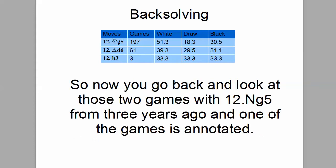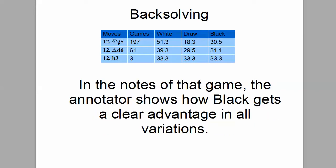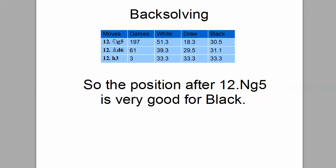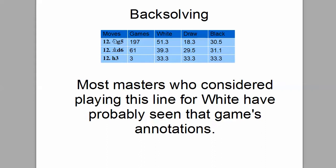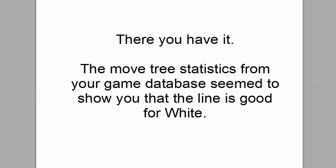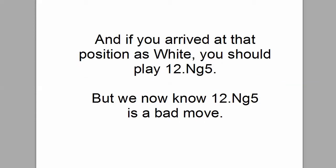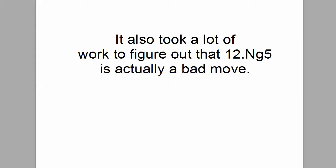Now you go back and look at those two games with Knight G5 from three years ago — the ones where black won. One of the games is annotated, and in the notes of that game, the annotator shows how black gets a clear advantage in all variations. So the position after 12 Knight G5 is very good for black. Most masters who consider playing this line for white have probably seen that game's annotations. The move tree statistics from your game database seem to show that the line is good for white, and that you should play 12 Knight G5. But we now know Knight G5 is a bad move.